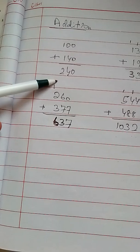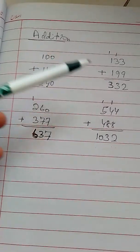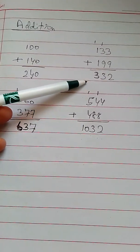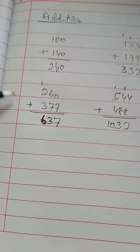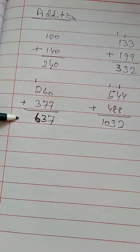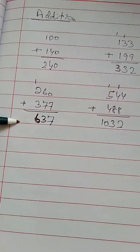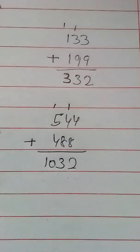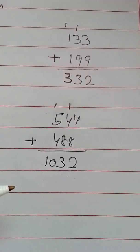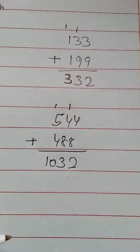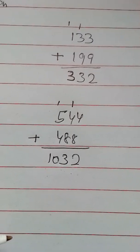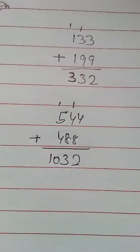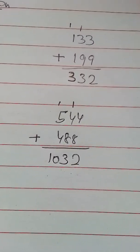100 plus 140, answer 240. 133 plus 199, answer 332. 260 plus 377, answer 637. 544 plus 488, answer 1032. So hope you students understand how addition can be performed. Thanks.